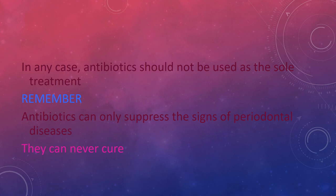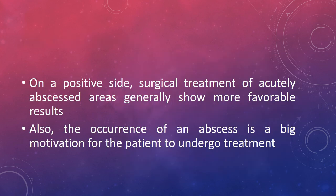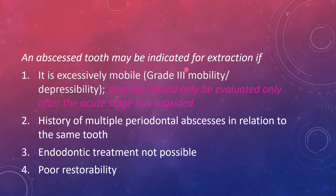Importantly, antibiotics should not be used as a sole treatment — they can only suppress the signs of periodontal disease and can never cure it. For the definitive phase, once acute symptoms have subsided, the underlying periodontal problem should be treated as soon as possible to prevent recurrence. Multiple episodes of periodontal abscess result in rapid bone loss, gingival recession, pathological migration, endodontic involvement, and ultimately tooth loss. On a positive note, surgical treatment of acutely abscessed areas generally shows more favorable results, and the occurrence of an abscess is a strong motivation for the patient to undergo treatment.